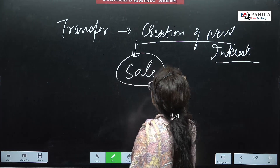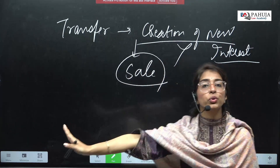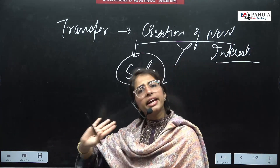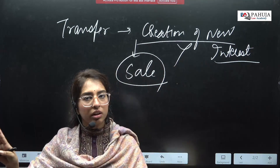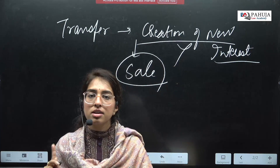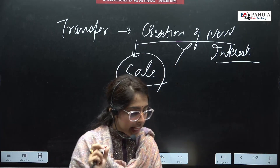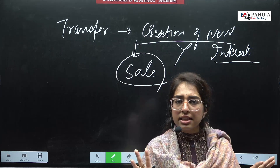But when you gave rupees 10 to a beggar, did you expect something in return? Did you ever think the beggar would give you a chocolate or more money in return? That means when you are giving something to a beggar, you are very clear that no new interest is going to be created. So any transfer in which a new interest is created in your favor — that transfer will be termed as sale. When there is no creation of new interest, it can be a normal transfer, but it will not be a sale.